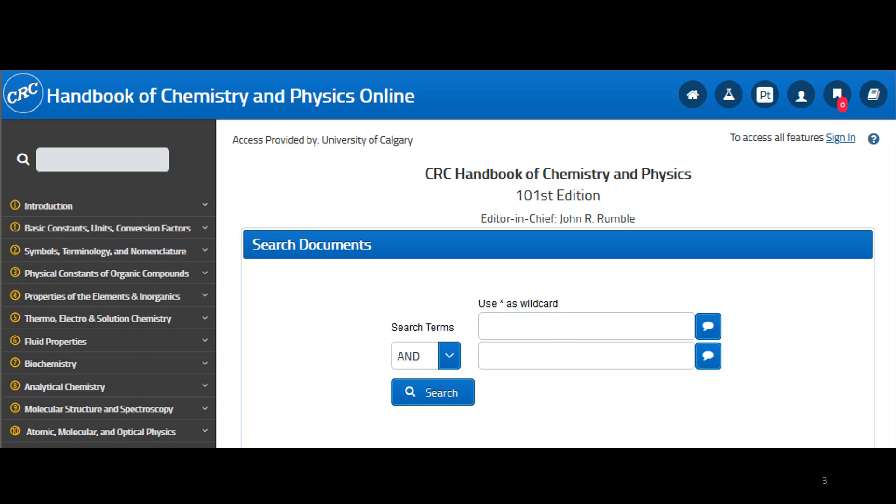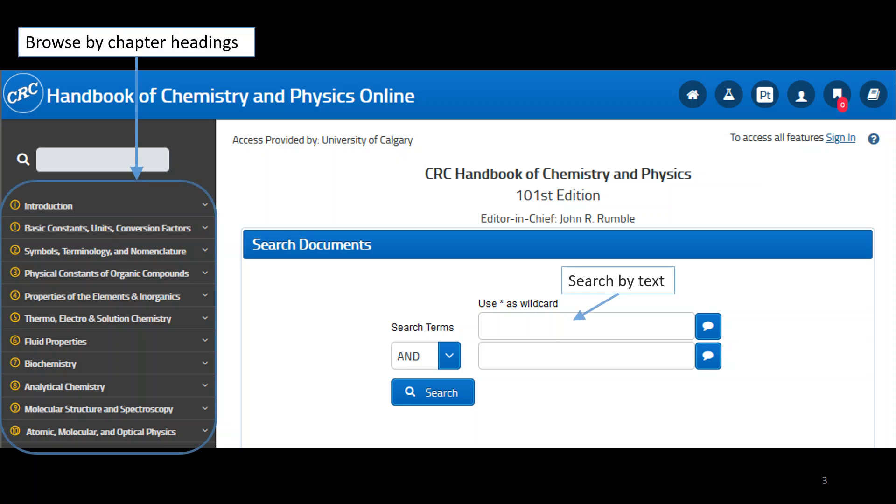The CRC Handbook of Chemistry and Physics contains chemical and physical properties and other data of organic and inorganic substances. Much of the data is presented in tables, however there are different ways of finding that information. This video will show you three ways to access the information in the handbook: by browsing, text searching, and substance searching.